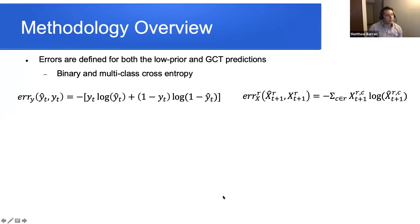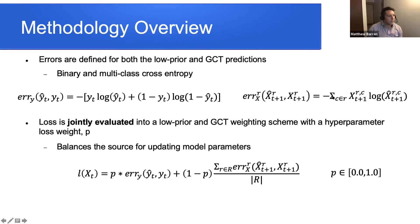To share the architecture through the objective function, we define two error functions — one for the low prior clinical task and one for the generic clinical task — both cross-entropy. The loss is jointly evaluated through a low prior/GCT weighting scheme using hyperparameter P, which throttles information between the two tasks. If P equals one, only the low prior clinical task loss is used; if P equals zero, only the generic clinical tasks are used. We expect an intermediate blend, with P being some continuous value between zero and one.